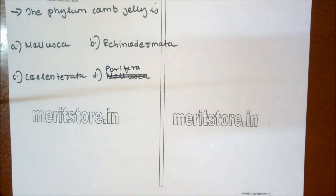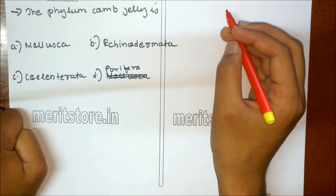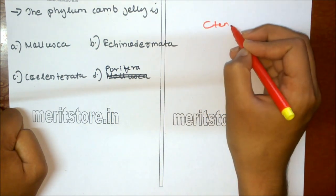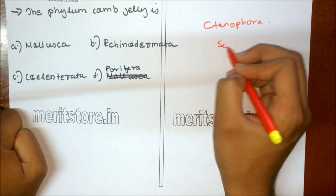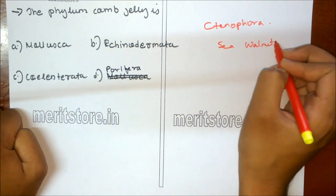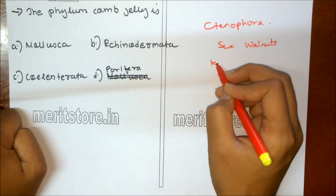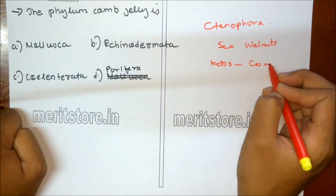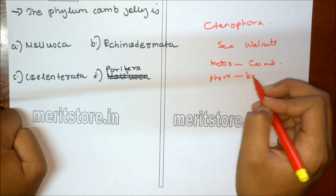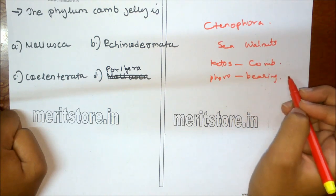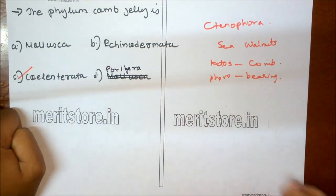Phylum comb jelly is: A Mollusca, B Echinodermata, C Ctenophora, D Porifera. Ctenophora is a small phylum, also known as Coelenterata, commonly known as comb jellies or sea walnuts. They show bioluminescence. The phylum takes its name from 'ketos' meaning comb and 'poros' meaning bearing, as the animals possess eight comb-like structures for locomotion. So Ctenophora is the correct answer.